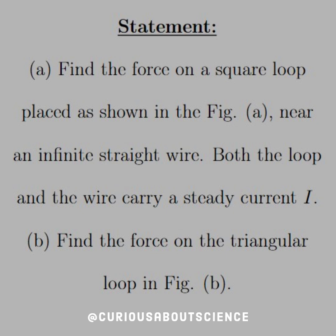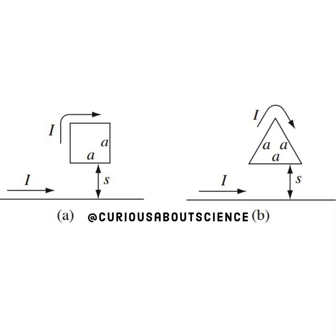For part B, find the force on a triangular loop in figure B. A review of the figure shows that for part A, we have an infinite wire on the bottom and separated by distance S is the square loop, both carrying current I. For figure B, we have the same scenario except a triangular loop of side length A, again with both currents I separated by distance S.